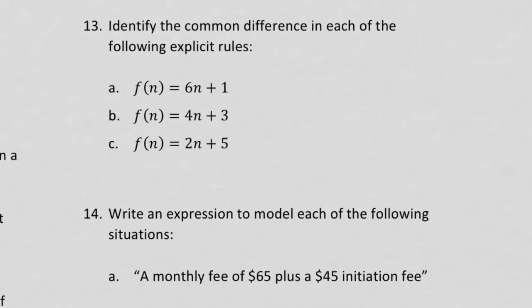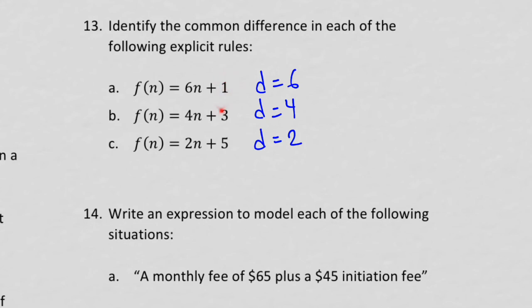Number thirteen: identify the common difference in each explicit rule. For f(n) = 6n + 1, d equals 6. For f(n) = 4n + 3, d equals 4. For f(n) = 2n + 5, d equals 2. The common difference is always the number next to the n. Remember, the other number — the constant — is f(0), the term before the first term, not f(1), because the rule is not written in the standard form we're used to.